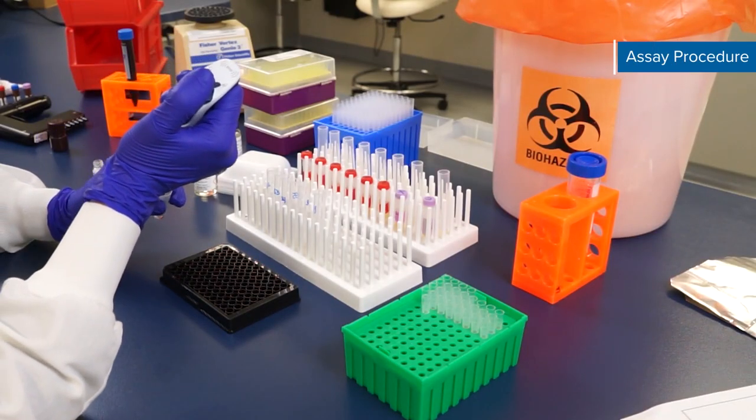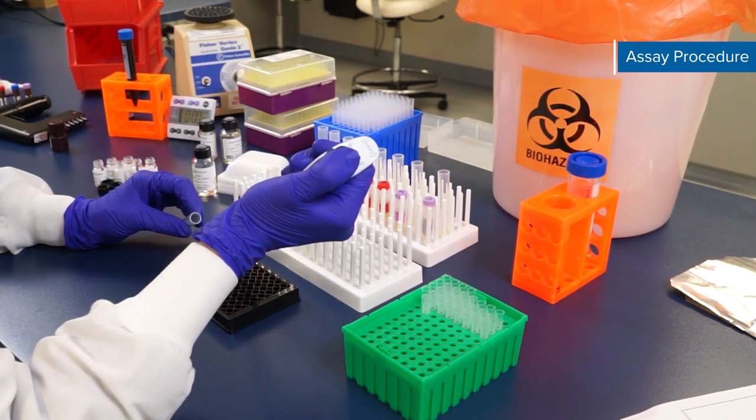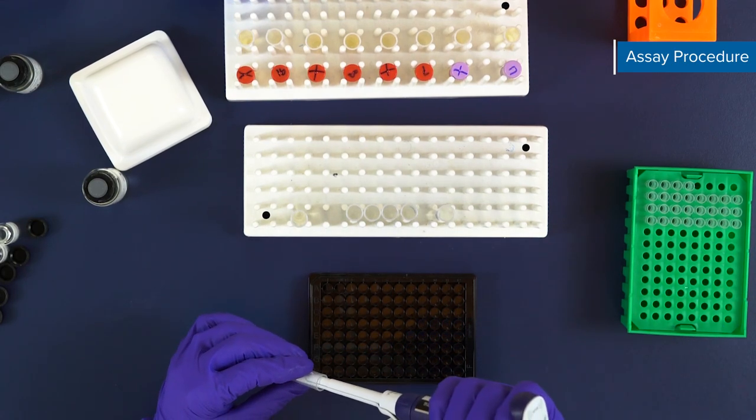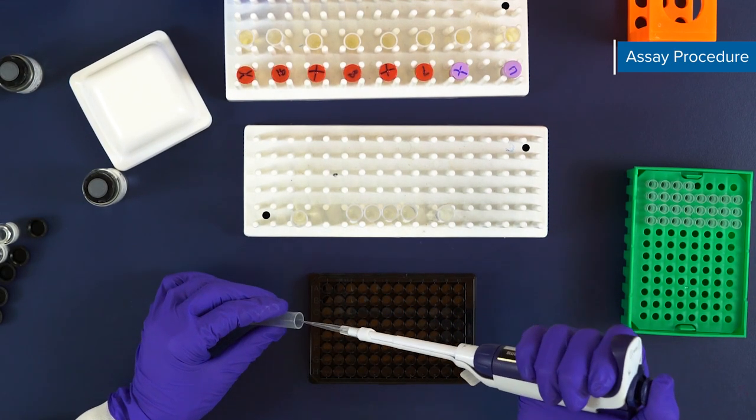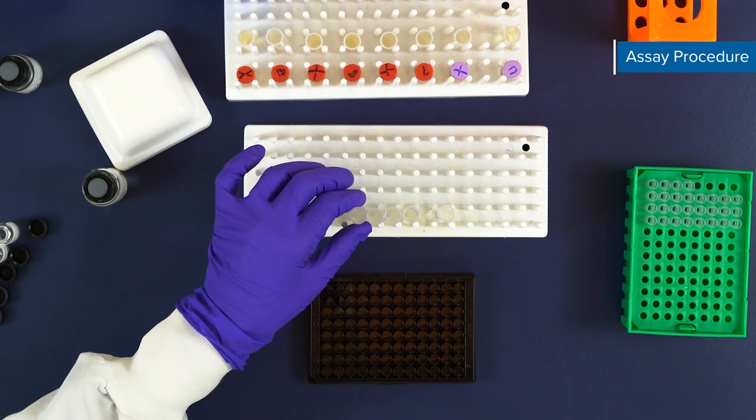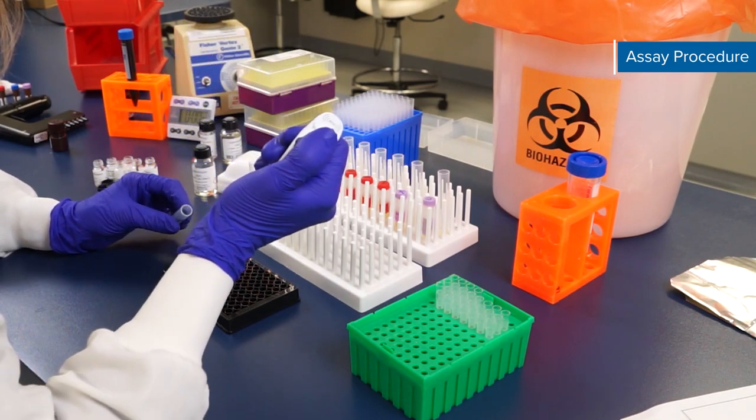Once you've prepared all reagents, standards, samples, and your instrument as directed by the kit booklet, it's time to load the plate. We recommend that all samples and standards be assayed in duplicate. During the assay remember to protect the diluted microparticle cocktail and streptavidin PE from light. First add 50 microliters of standard, sample, or blank per well.